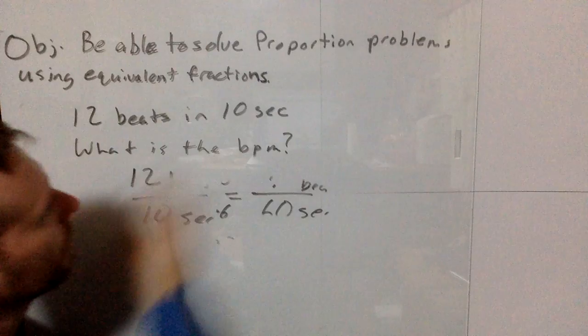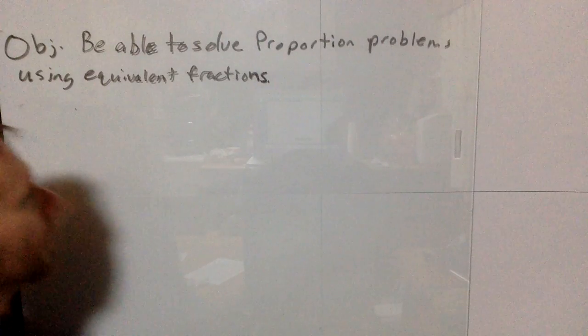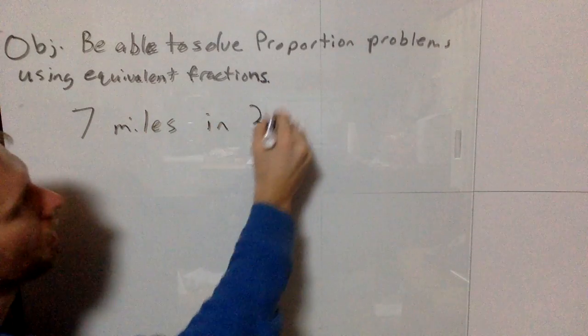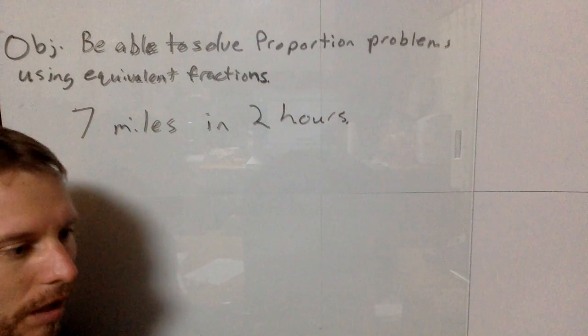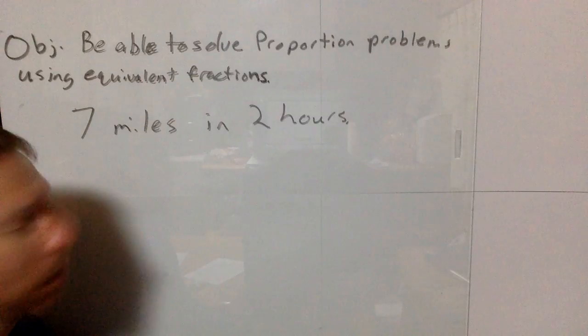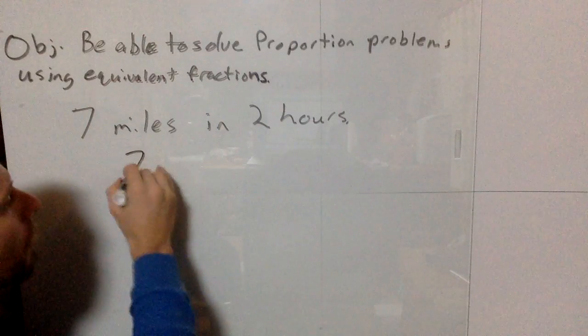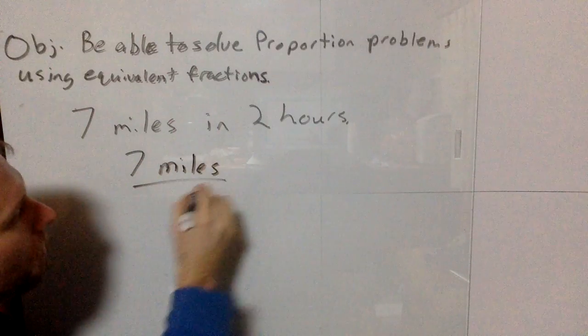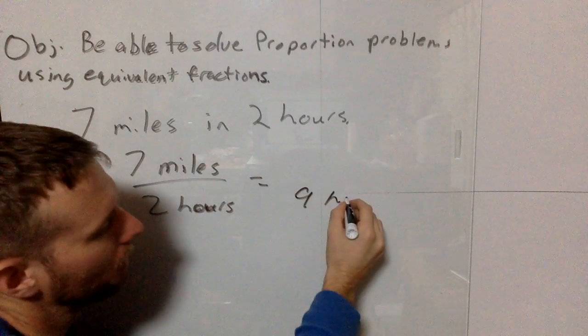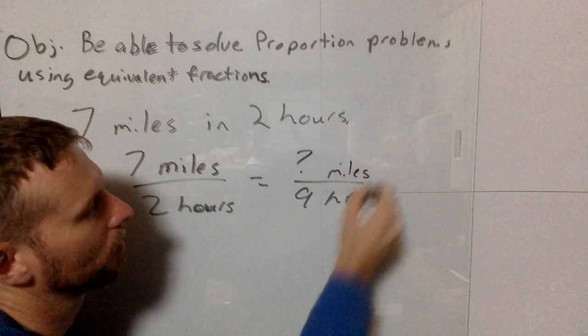Last problem: Let's say I go hiking in the morning and go 7 miles in 2 hours. I figure I'll hike for a total of about 9 hours. I want to know if I hike for 9 hours at this same rate, how far will I go? I set up the proportion: 7 miles in 2 hours equals how many miles in 9 hours.